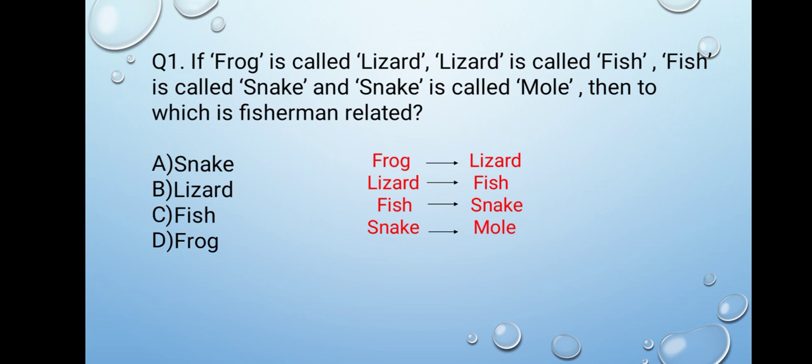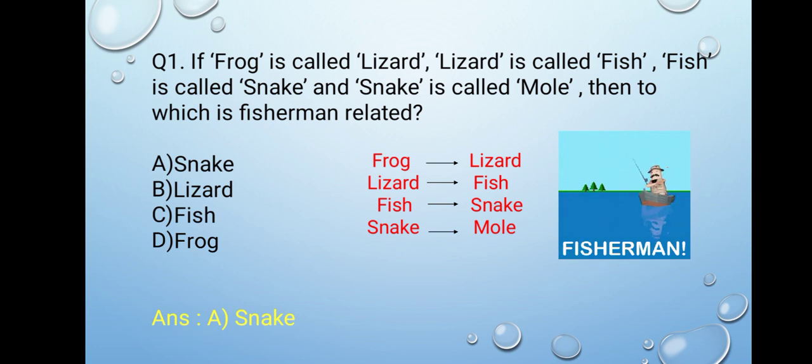Children, such a table helps us in learning what was the meaning of frog, what was the code of fish and so on. Then, to which is fisherman related? Everyone has seen a fisherman. What does a fisherman catch? He catches fishes. And here fish is coded as snake. So, the answer will be A, snake.